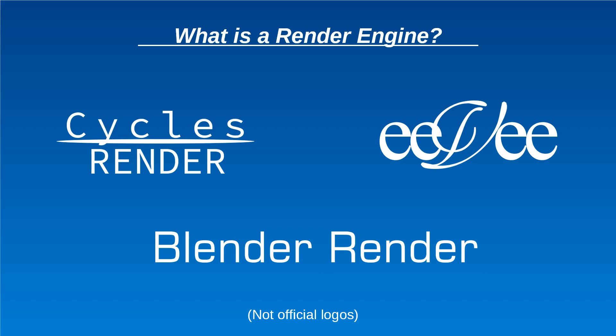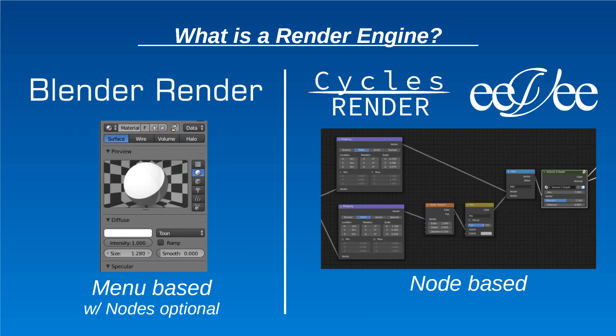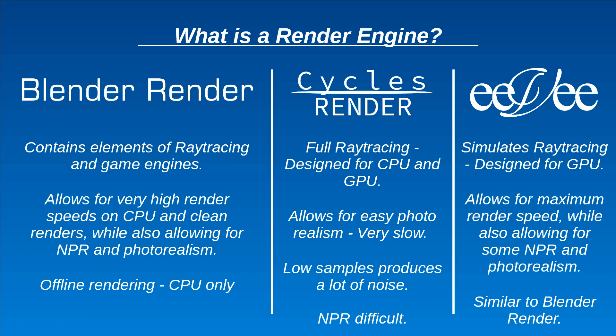Blender technically has three render engines. These render engines differ from each other in a few very important ways. On the interface side, Blender Render is menu based with the option of nodes, while Cycles and Eevee are primarily node based and functions are in slightly different locations. For example, Cycles and Eevee combine the process of textures and shaders, where in Blender Render there are two components. Under the hood we find much more major differences. Blender Render is a combination of a ray tracer and game engine. Cycles is a full ray tracer built for realism. Eevee is very much based on modern game engines with a strong focus on physically based rendering or photorealism.